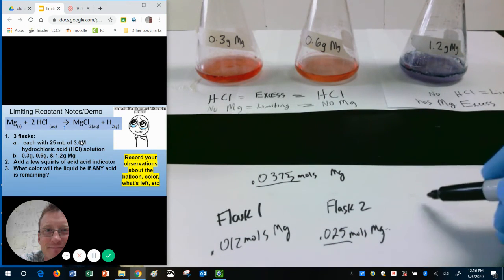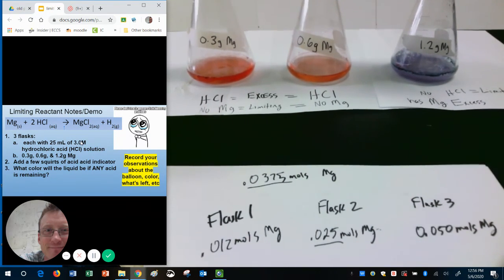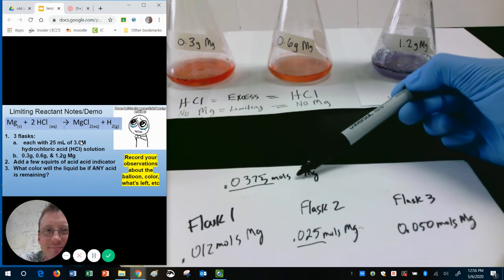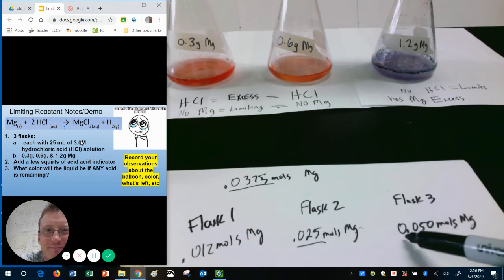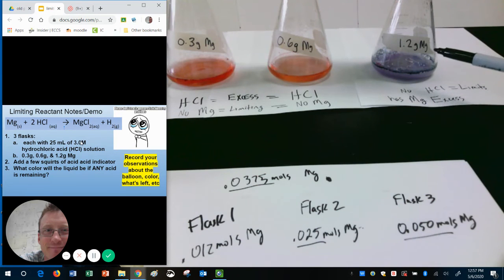Well then we get to our third flask. And here we have a big change. Our third flask, how many moles of magnesium do we have? We had 0.05 moles. Why is this one now suddenly different? Why does this one have now no more acid in it, no more HCl? Well, because we only had enough acid to react with 0.0375 moles of Mg. 0.05 is bigger than that. So what happens is all of our acid is chewing up the magnesium and it's creating the new products. Once we have chewed up this many moles of magnesium, suddenly we don't have any more HCl in there to react. The reaction stops.